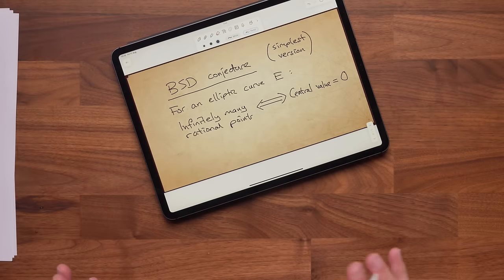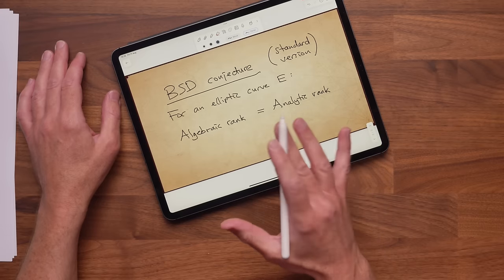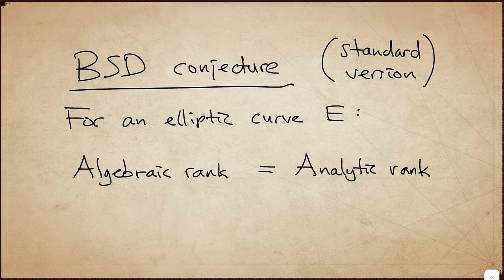We left the BSD conjecture hanging. The simple version was that for an elliptic curve, there are infinitely many rational points if and only if the central value is zero. The standard version of BSD is sometimes called the weak version, which is funny because this is the version that could give you $1 million. It says that for any elliptic curve, the algebraic rank is equal to the analytic rank.